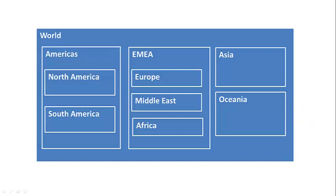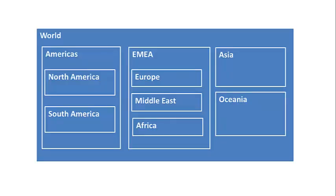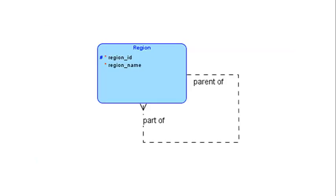That's another example of a situation where a unary relationship might occur. You've got an entity type called region, and some regions are contained in other regions. One region might be the parent of zero or many regions — regions at the very bottom of the tree, like Oceania, Asia, Africa, Middle East, are not parents of anything. And one region can only be a part of one other region; the world region is not a part of any other region. It's exactly like the organization chart example we looked at earlier, so you can use the unary relationship here.